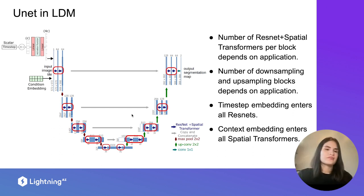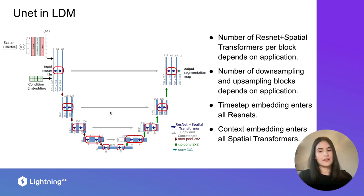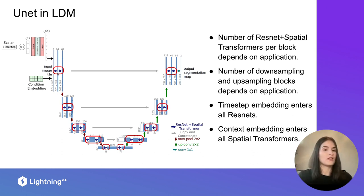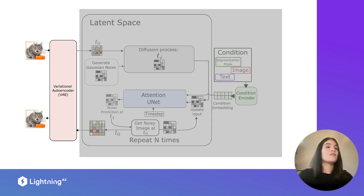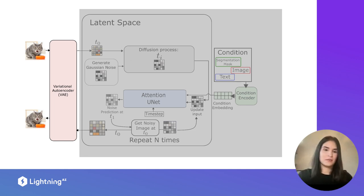How deep the network goes — how many downsampling and upsampling layers — varies depending on the application. The authors tune those parameters as well as the number of ResNet and convolution layers per block to adapt the model from one application to another. So now we understand the U-Net and how it removes noise. Let's take a look at the variational autoencoder.